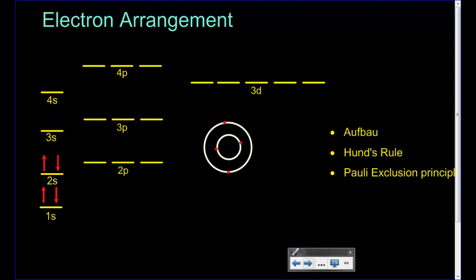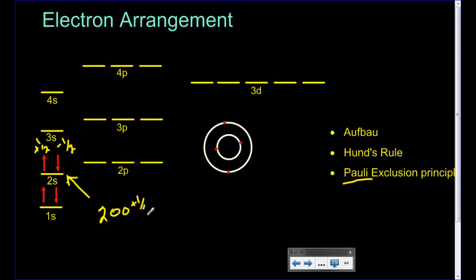When we add another electron, notice the arrows go in opposite directions — the first is plus one-half spin and the second is minus one-half spin. This is Pauli's exclusion principle: no two electrons can have the same quantum numbers. So for two electrons in the 2s orbital, the quantum numbers would be 2, 0, 0, plus one-half and 2, 0, 0, minus one-half. They can't spin in the same direction.